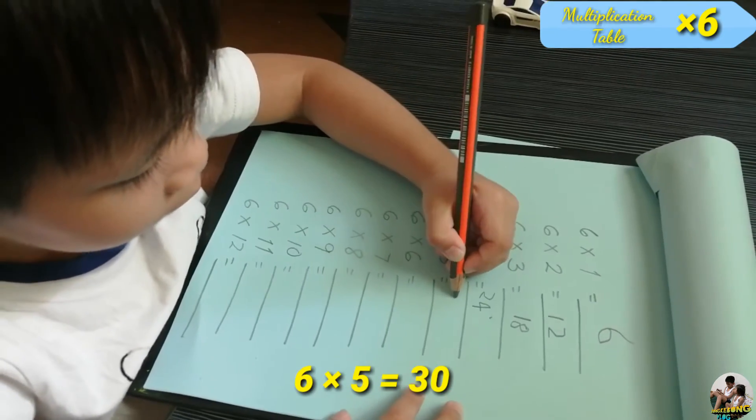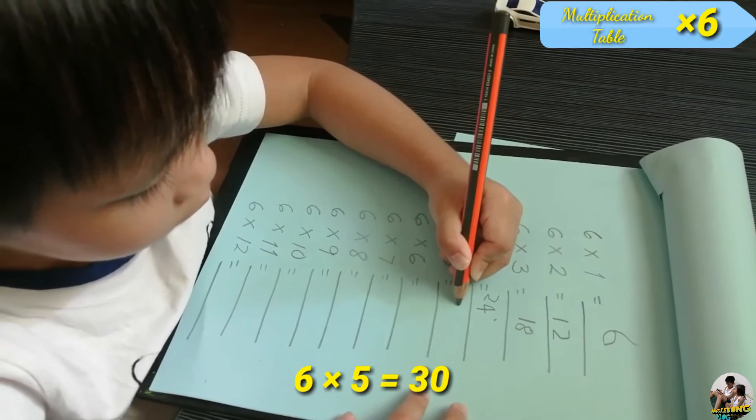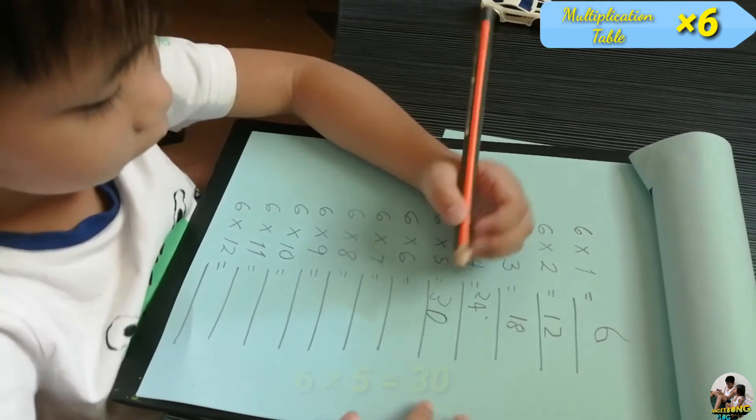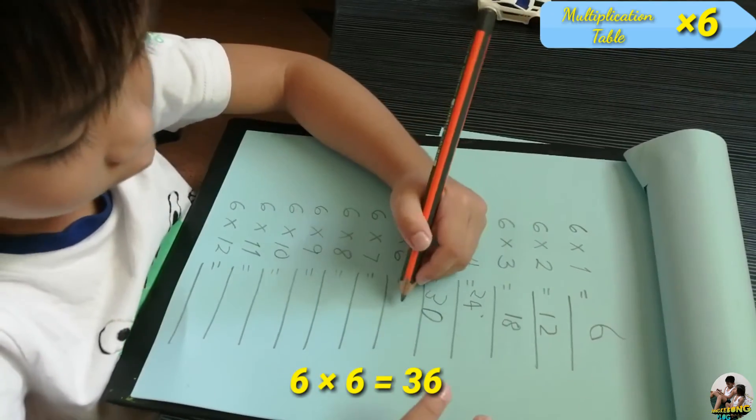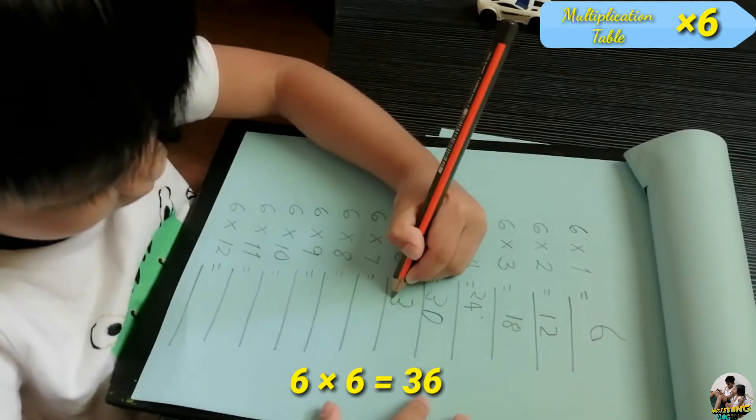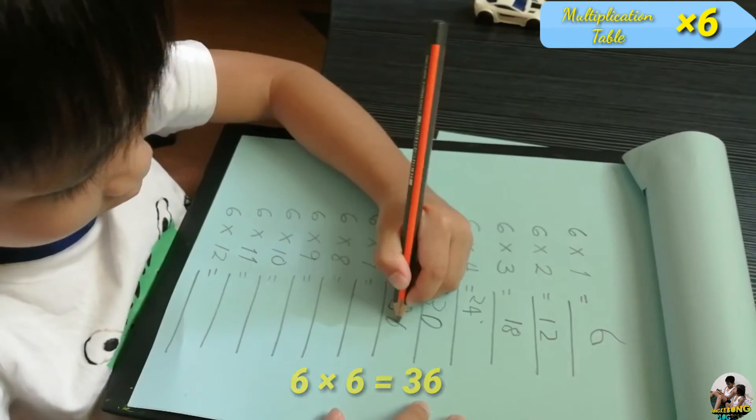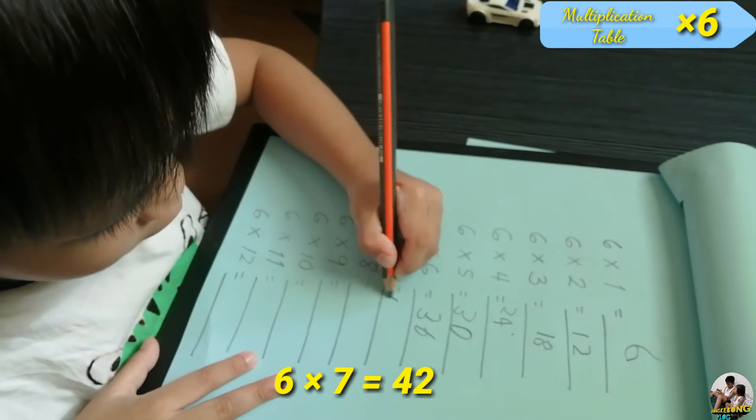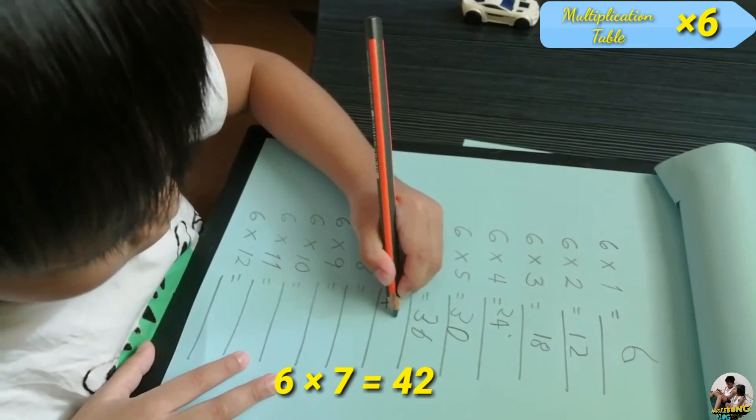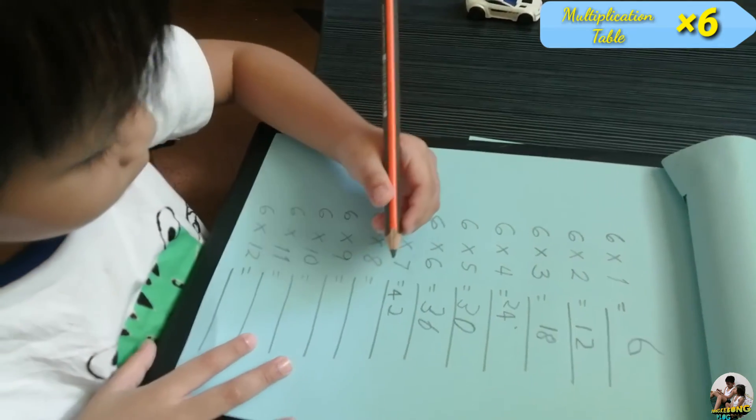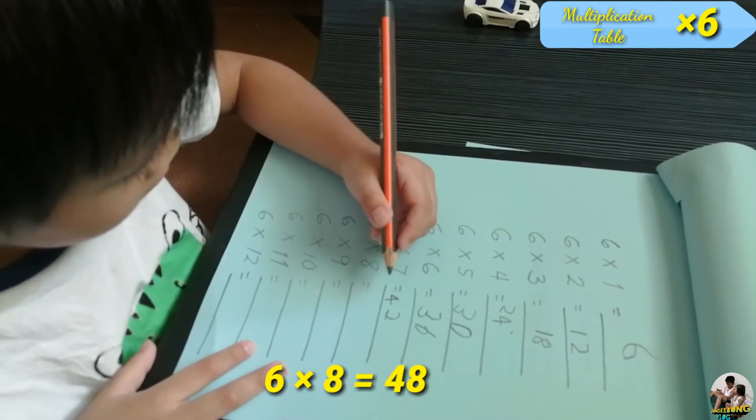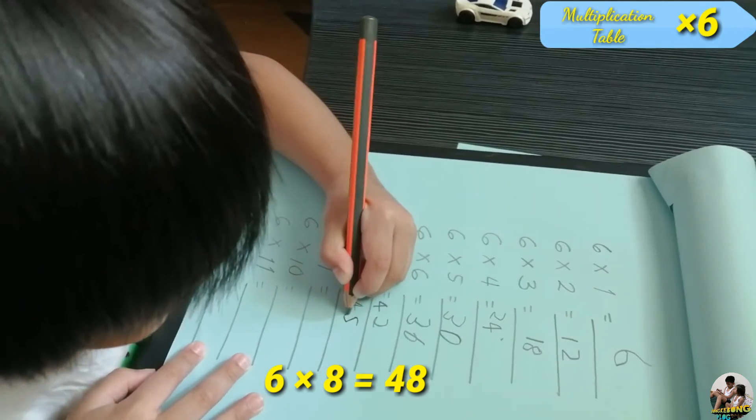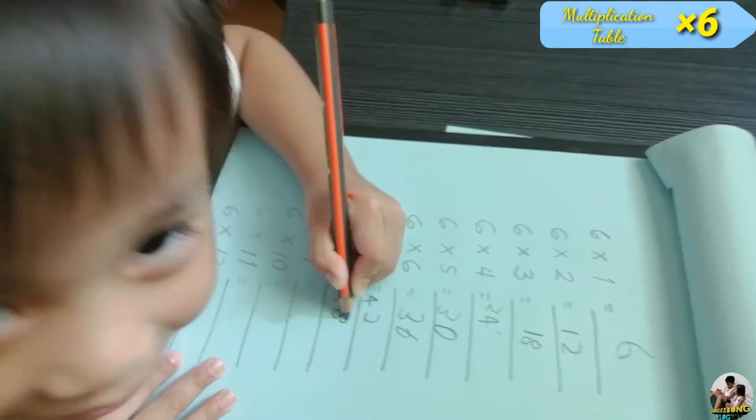Six times five equals thirty. Six times six equals thirty-six. And six times seven equals forty-two. Six times eight equals forty-eight. Great job.